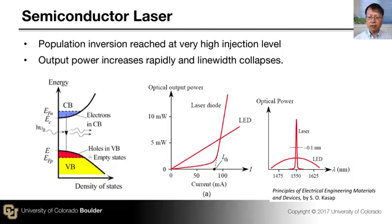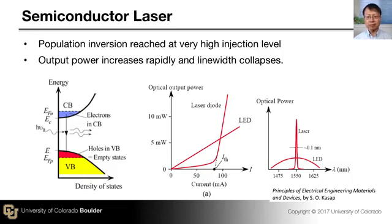At the onset of laser emission, the originally broad-band spontaneous emission collapses into a very narrow line width, which is determined by the cavity formed by the two reflectors. For the edge-emitting laser, this is the cavity defined by the two facets (front and back). For the vertical cavity surface emitting laser, the cavity is determined by the two multi-layer reflectors as shown in the first slide.